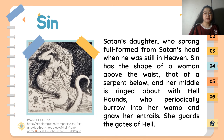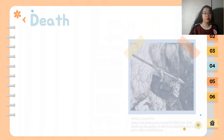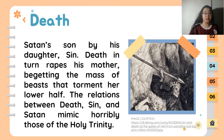For our next character, we have Sin — Satan's daughter who sprang fully formed from Satan's head when he was still in heaven. Sin has the shape of a woman above the waist and that of a serpent below, with her middle ringed about with hellhounds who periodically burrow into her womb and gnaw her entrails. She guards the gates of hell. And for our last character, we have Death — Satan's son by his daughter Sin. Death in turn rapes his mother, begetting the mass of beasts that torment her lower half. The relations between Death, Sin, and Satan may make a horrible parody of the Holy Trinity.